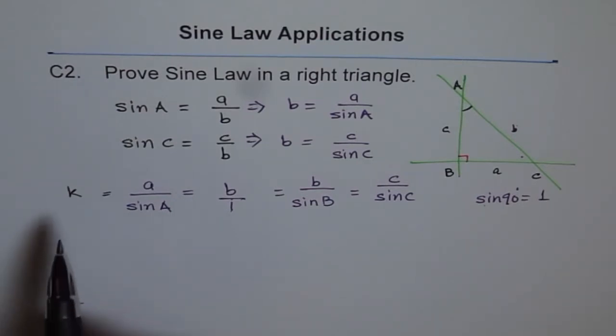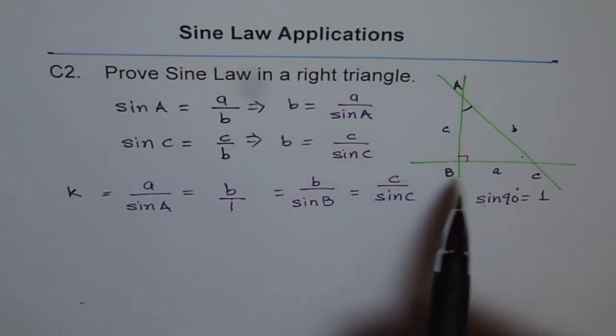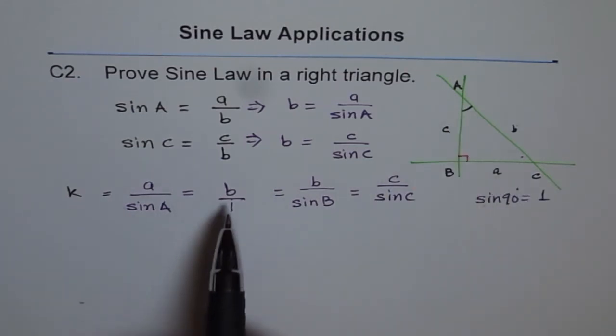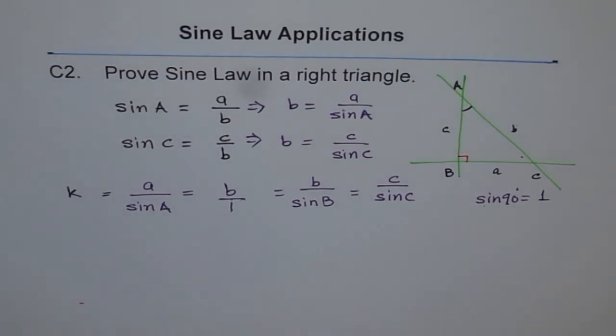And fortunately for us, in a right triangle, that constant is b, the hypotenuse itself. That's why you'll find solving right triangles much simpler. But that's giving you another perspective of sine law, and I hope that helps to understand. Let's move forward and do some word problems. Thank you.